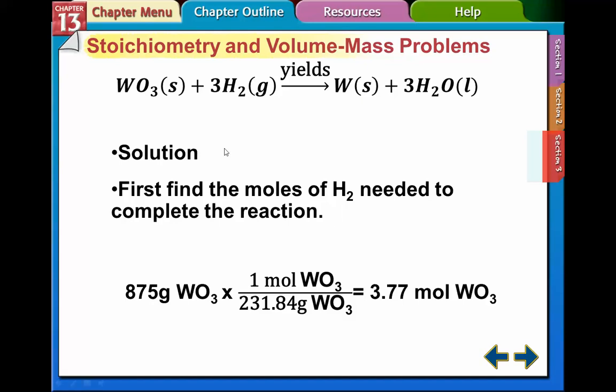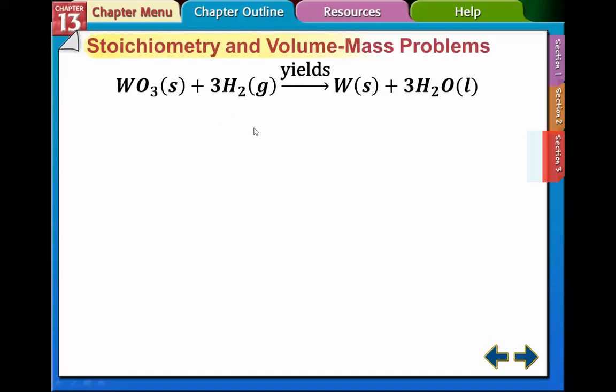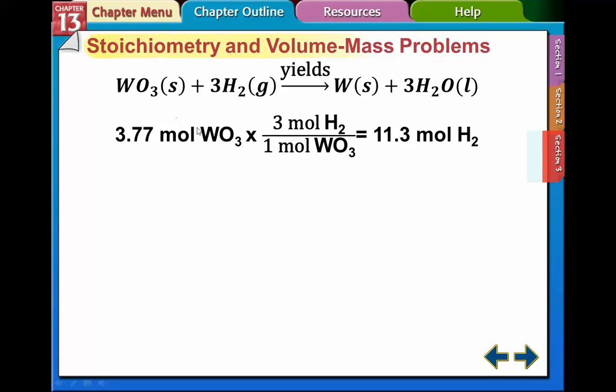Now we have the moles of tungsten oxide. We need to figure out how many moles of hydrogen we have, so we use the mole ratios from the balanced equation. The ratio here is 1 mole of tungsten oxide combines with 3 moles of hydrogen gas.